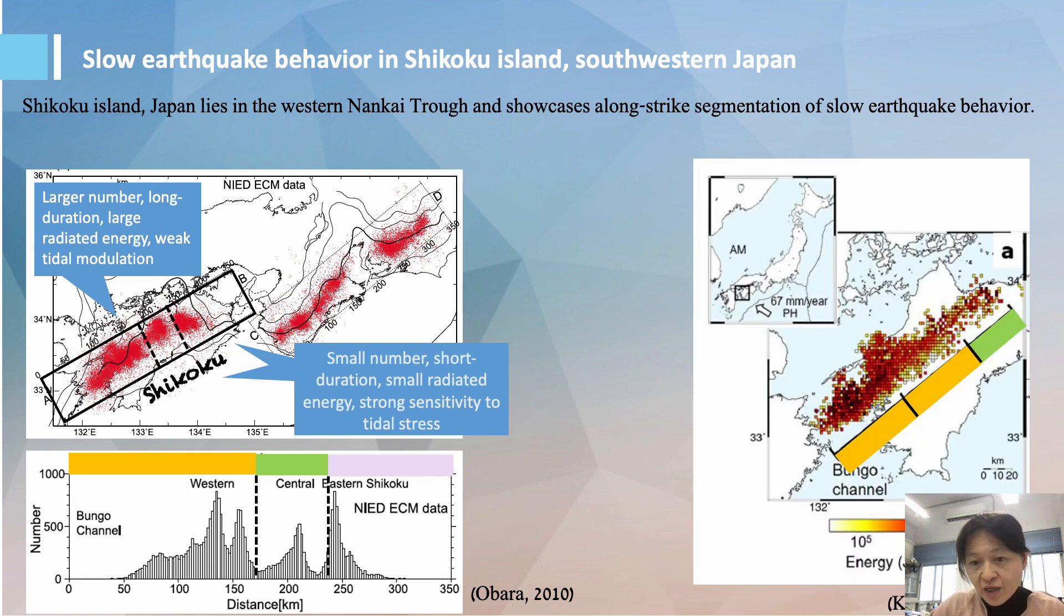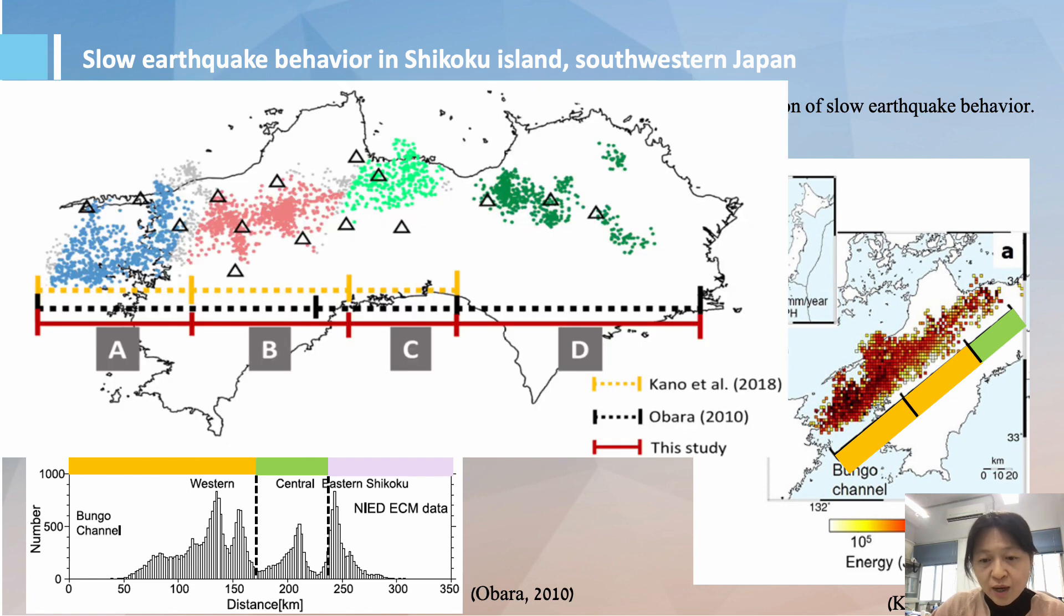Considering the lateral variations of mean energy, number, and duration of tremors, Connell et al. in 2018 further divided the Western and Central areas by Obara into three segments. In total, you have four segments shown here from A to D.